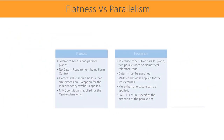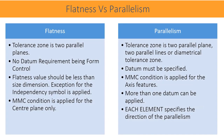Summary comparison — Flatness: the tolerance zone is two parallel planes; no datum requirement, being a form control; flatness value should be less than the size dimension except when the independency symbol is applied; MMC condition is applied for the center plane only. Parallelism: the tolerance zone is two parallel planes, two parallel lines, or a diametrical tolerance zone; datum must be specified; MMC condition is applied for axis features; more than one datum can be applied; each element specifies the direction of parallelism.